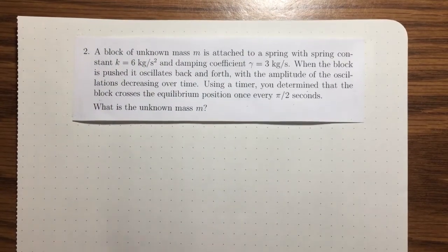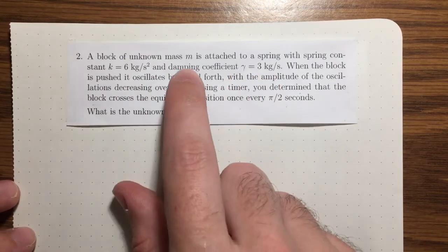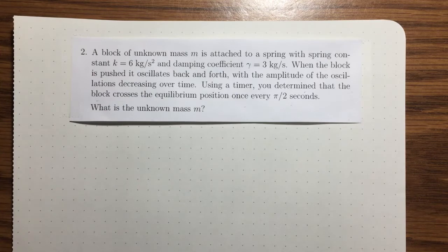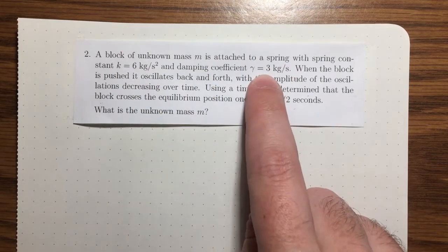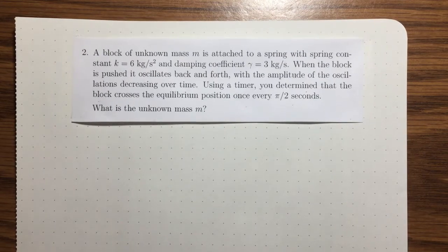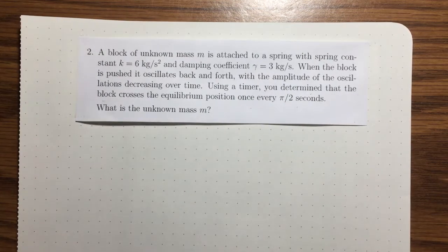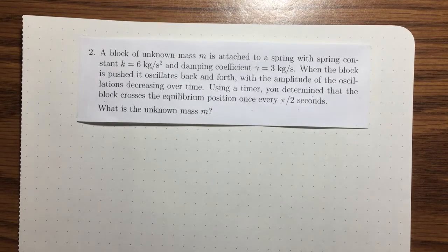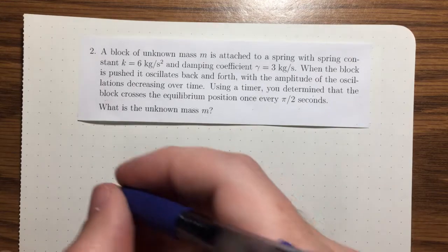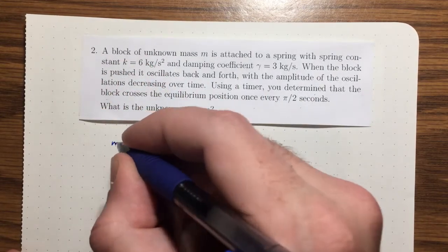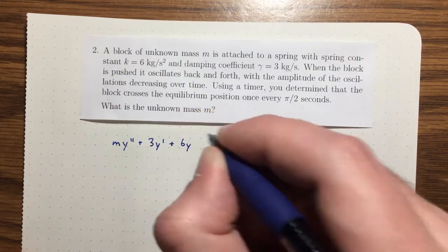The next problem: we have a block of unknown mass m attached to a spring with a known spring constant and damping coefficient. There is damping in this problem. When the block is pushed it will oscillate back and forth but the amplitude decreases over time — that makes sense because there's damping. Using a timer, you determine that the block crosses the equilibrium position once every π/2 seconds. We need to find the unknown mass m.